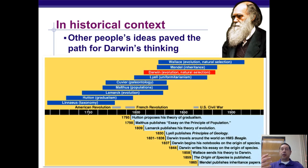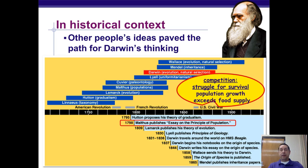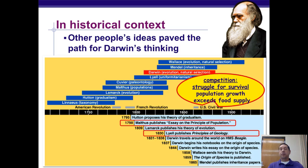Darwin also used information from his contemporaries. One key influence was economist Thomas Malthus, who published an essay on the principles of population dealing with supply and demand. This led to Darwin's idea of survival of the fittest: competition creates a struggle for survival, population growth exceeds food supply, and only those best at getting food survive and reproduce. Another important influence was Lyell's book Principles of Geology, which suggested the Earth was much older than most people — including most scientists — believed at the time. This allowed enough time for evolution and natural selection to produce the diversity of life Darwin observed.